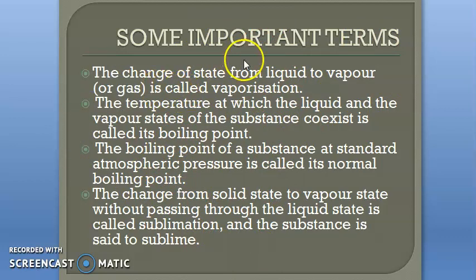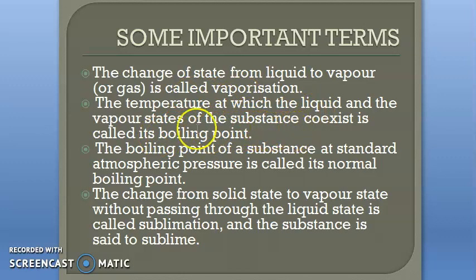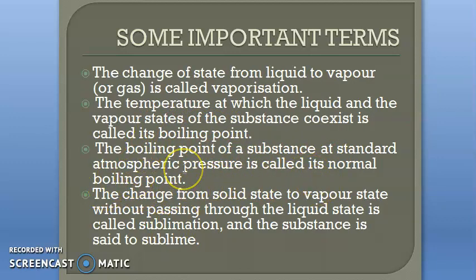The temperature at which the liquid and vapor states of a substance co-exist is called the boiling point. The boiling point of a substance at standard atmospheric pressure is called its normal boiling point. Standard atmospheric pressure is 1 atm.